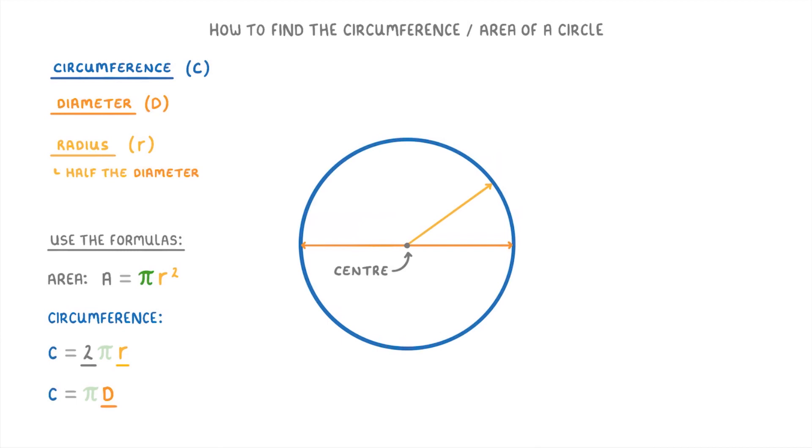So if you have the radius, then you can use this first form, and if you have the diameter, then use the second one.